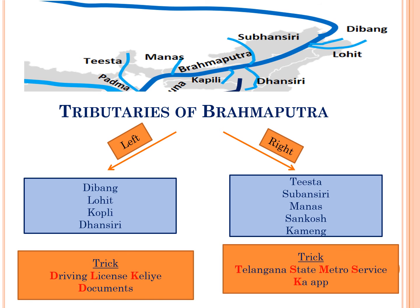The right tributaries are Tista, Subansri, Manas, Sankosh, and Kameng. The trick to remember these right tributaries is 'Telangana State Metro Service Ka App,' where the first letter represents the first letter of the name of each river.